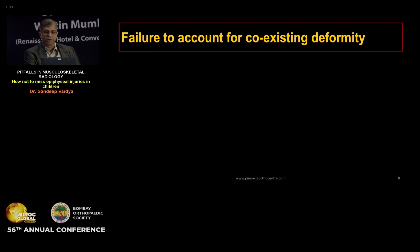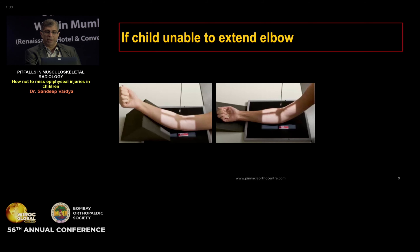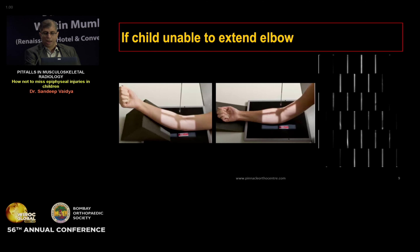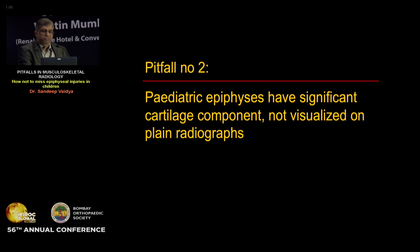On the internal oblique X-ray we realize the displacement is more than acceptable, so this fracture requires fixation. Sometimes we also fail to account for co-existing deformity. Following elbow trauma, the child is often unable to extend the elbow. An X-ray on a flexed elbow causes the capitellum to overlap the distal humeral metaphysis, which can be misinterpreted as a fracture of the lateral condyle. The solution is to obtain two separate views. Rule number one: always obtain optimal radiographic views and special views in select situations.